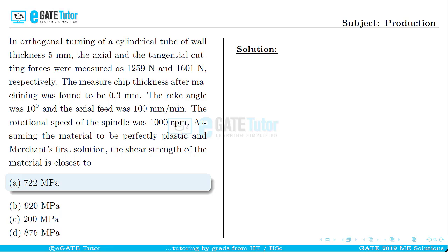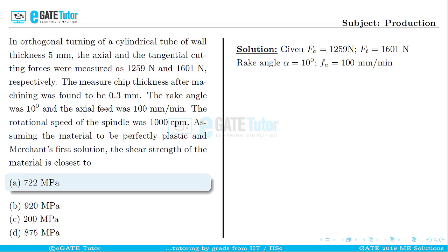The correct answer is option A: 722 megapascals. Let's proceed to the solution. In the first step, let us write down the given values. The axial cutting force is Fa = 1259 newton, the tangential cutting force is Ft = 1601 newton, the rake angle alpha = 10 degrees, and the axial feed is 100 mm per minute.